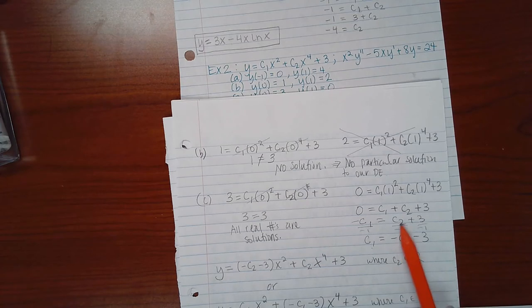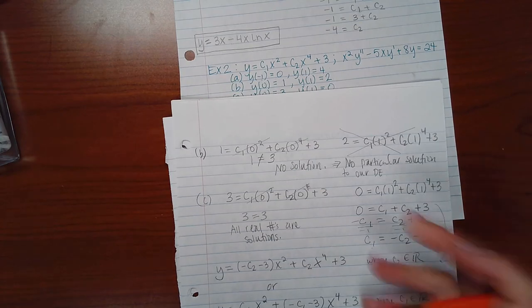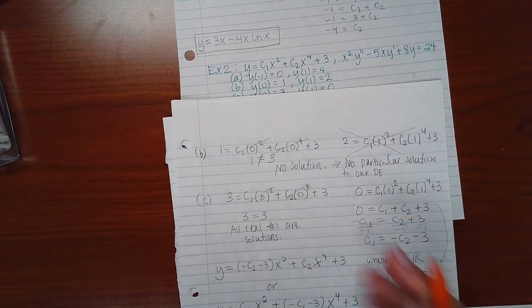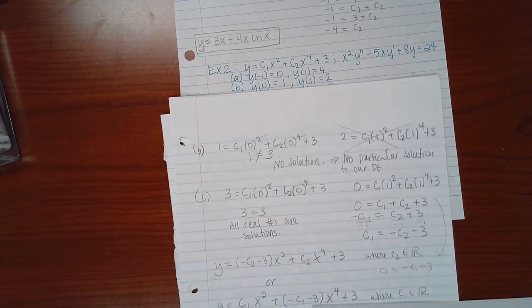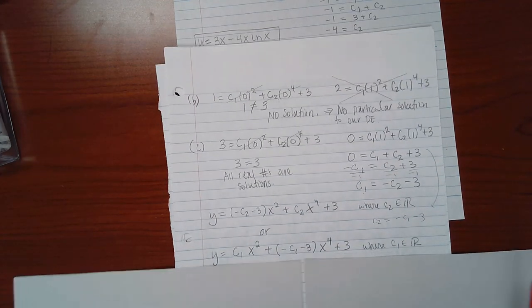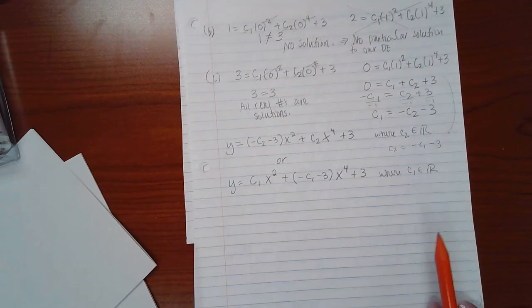Or I could solve this equation up here for C2. If I did, I would end up with C2 equal to negative C1 minus 3. And then I would plug in negative C1 minus 3 for C2, and I would plug in C1, and then I would say that C1 is going to be any real number. Either of these two items are correct.